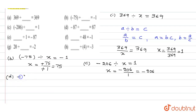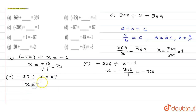Question d: x divided by 87 equals minus 1. So x equals minus 87 divided by 87 — the 87s cancel — giving x equal to minus 1.